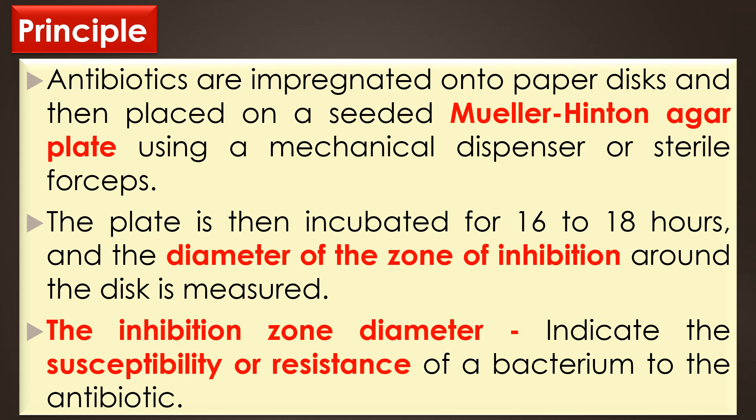The zone of inhibition diameter that is produced will indicate the susceptibility or resistance of a bacterium to the antibiotic. The antibiotic susceptibility patterns are also called an antibiogram. The KB Boyer method is not restricted to antibiotics only — it may also be used to measure the sensitivity of any microorganisms to a variety of antimicrobial agents such as sulfonamides, synthetic chemotherapy, and other herbal or medicinal plants.